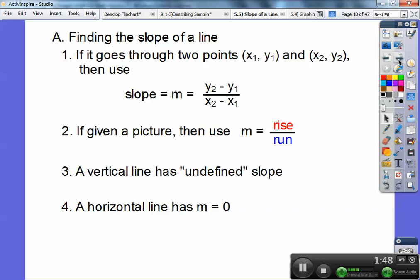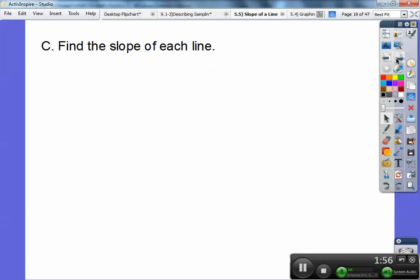Remember, if they give you two points, we're going to use this formula. If they give me a picture, I'm going to use rise over run. So find the slope of each line. It passes through the points (-4, 2) and (2, 6).